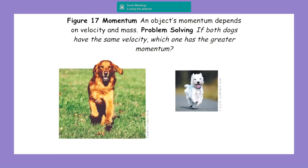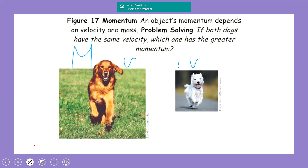Look at this picture. If both dogs have the same velocity, which one has the greater momentum — the brown or the white one? The brown one has greater momentum and is harder to stop because it is bigger, meaning it has greater mass. The white one is easier to stop because it has smaller mass. So the momentum of the brown dog is greater than the momentum of the white dog.